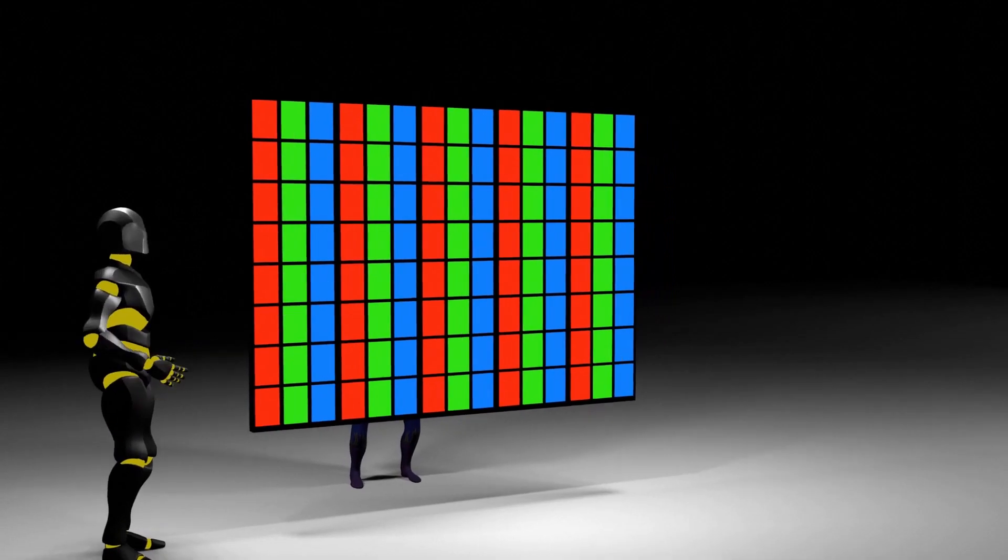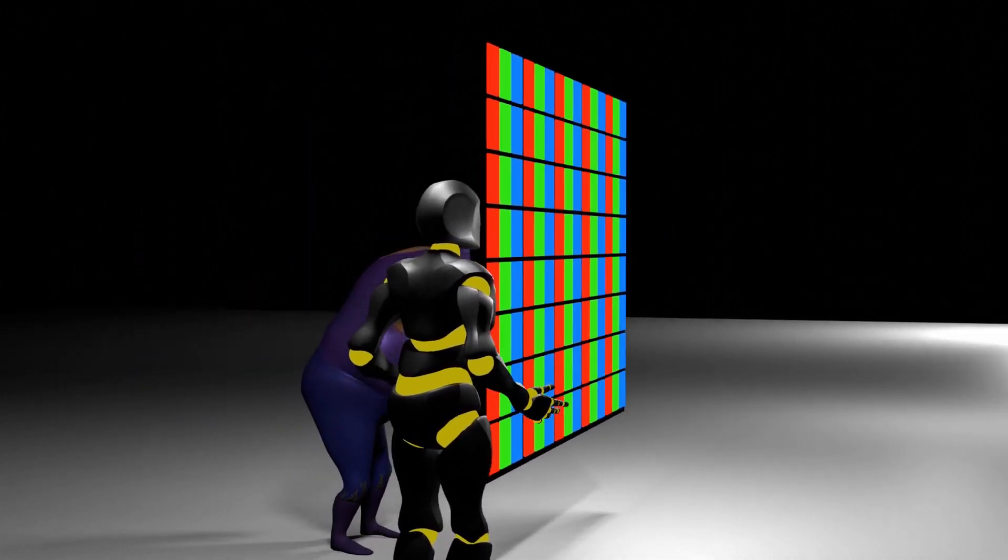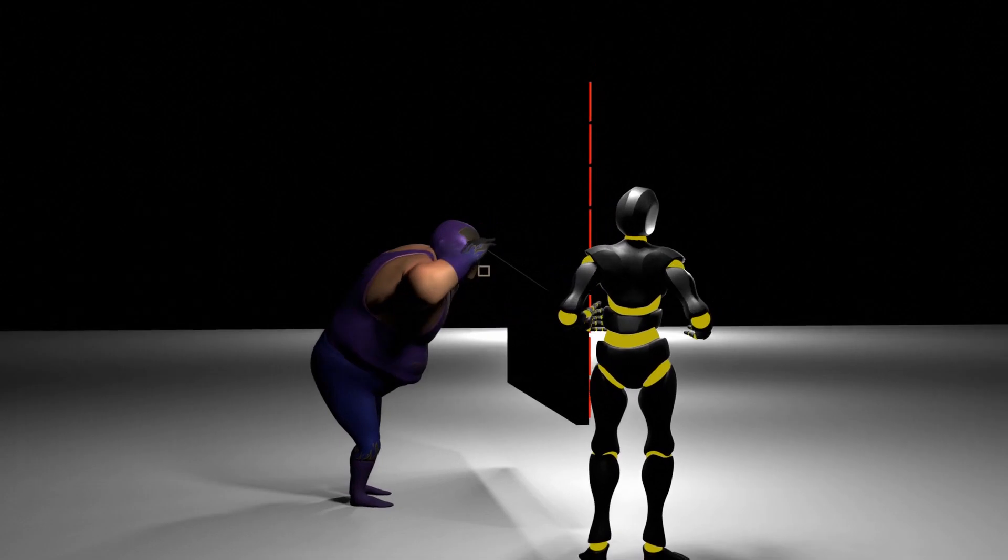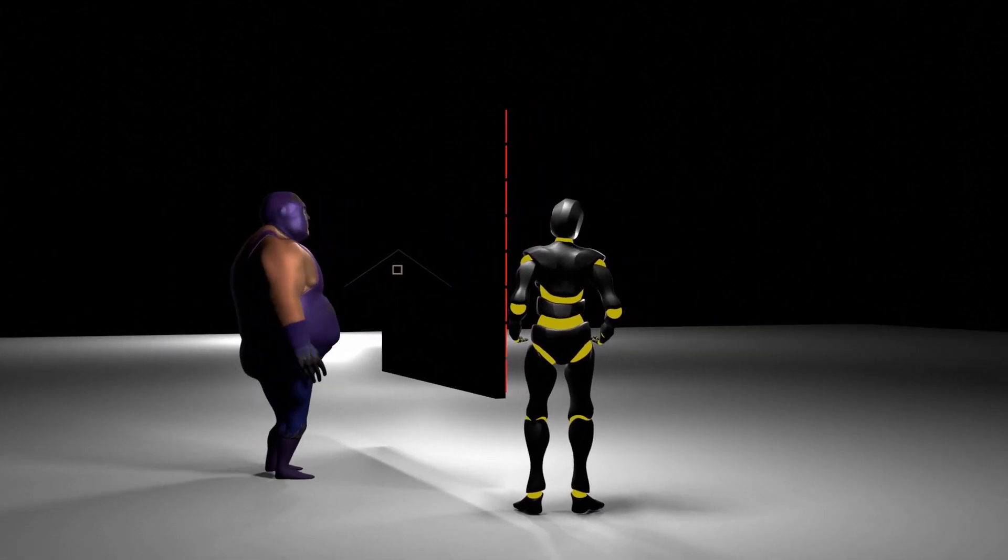Therefore, the transmittance of the OLED panel made up of tens of millions of pixels with 0% transmittance does not transmit light at all.